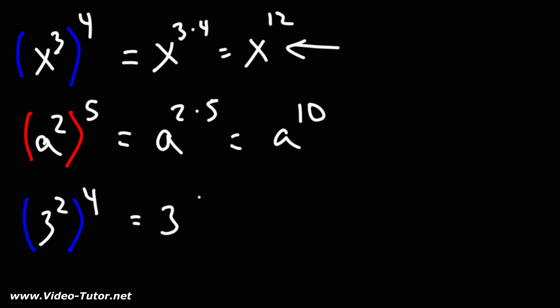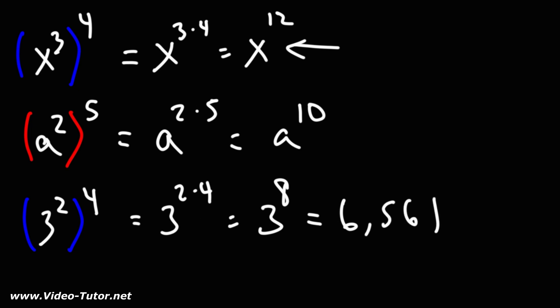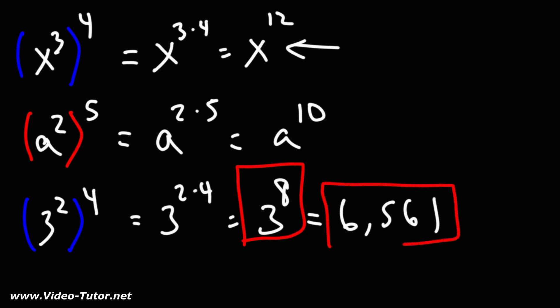For the next one, three squared raised to the fourth power. Two times four is eight, so we have three to the eighth power. Now if you want to, you could find out what three to the eighth power is. If you type this in your calculator, three to the eighth, it's a big number — it's 6,561. So in some cases you can leave your answer like this, and other times you may need to expand it to a whole number like that.